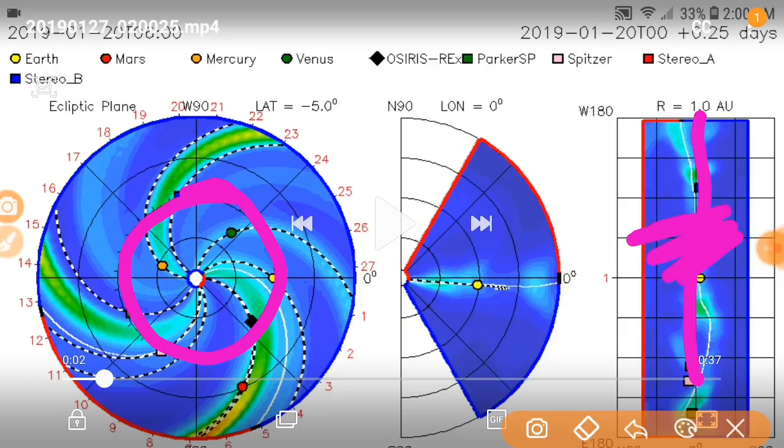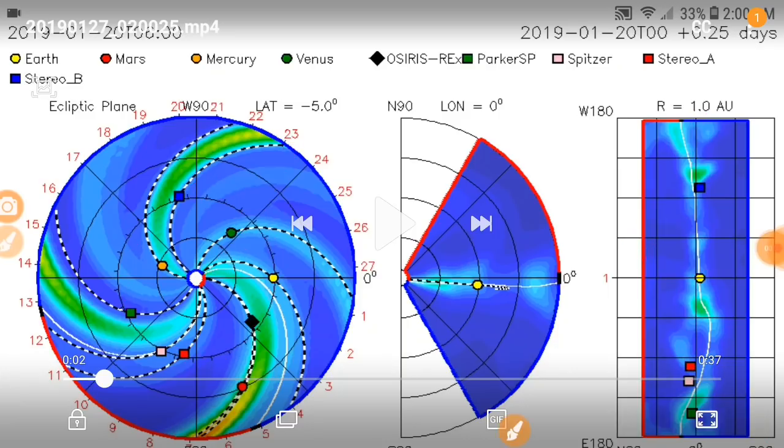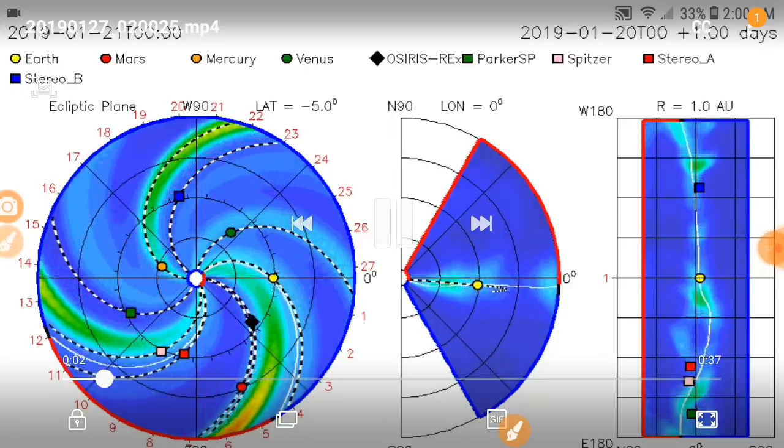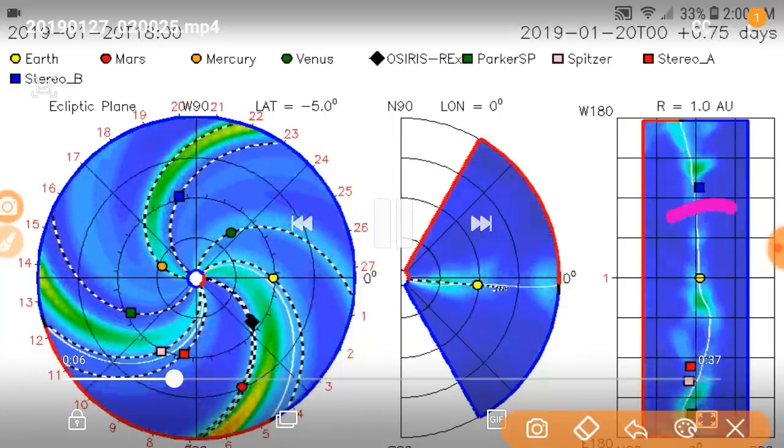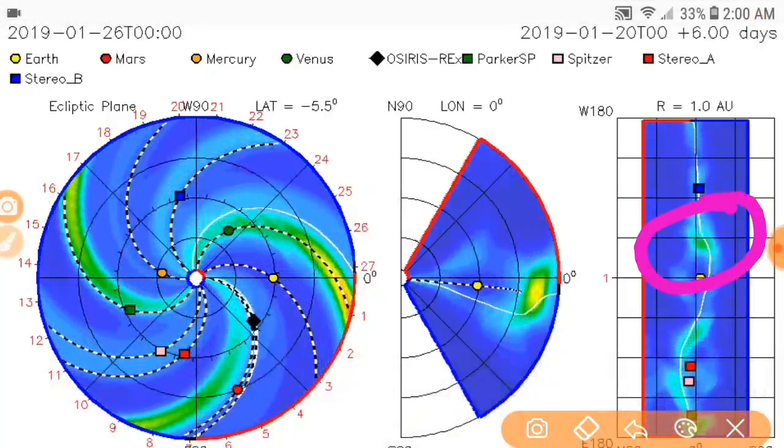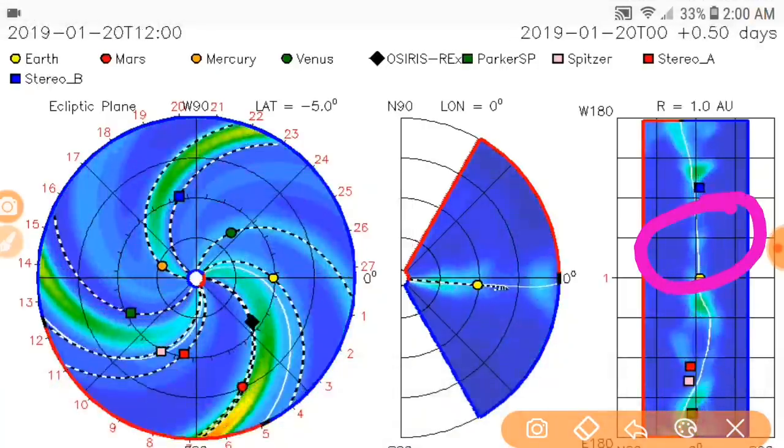Here on the left, the yellow dot is the Earth on all three of these. The blue box is Stereo B, the red box is Stereo A. Stereo B we haven't gotten data from it for a long time, like years. Stereo A is where we're getting our data from I believe. What you're looking at here is obviously you're looking down on our solar system. This is the orbit around the sun of our planet and all these other satellites.